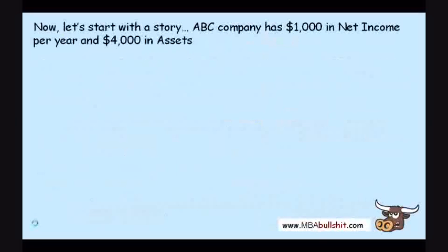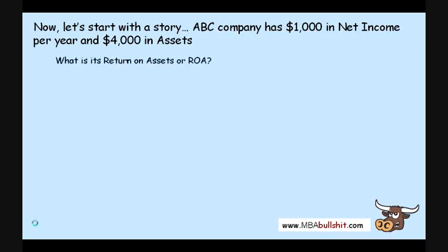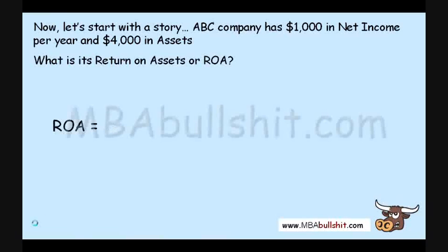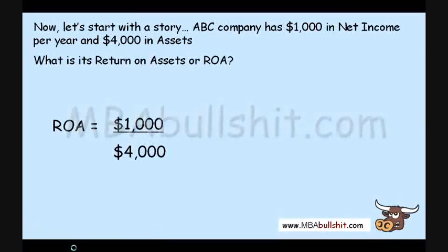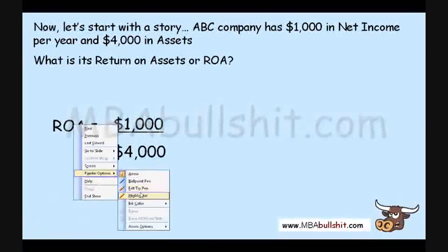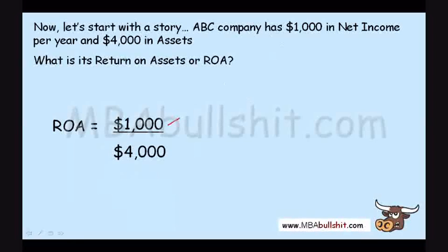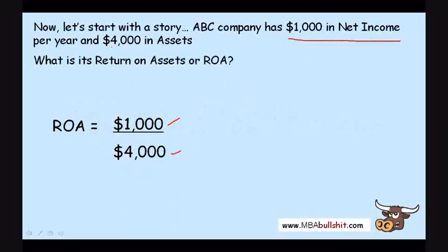Let's get down to it. Let's start with a story. Let's say that ABC Company has $1,000 in net income per year and $4,000 in assets. What is the return on assets? The ROA, or return on assets, equals $1,000, which is the net income, divided by $4,000,